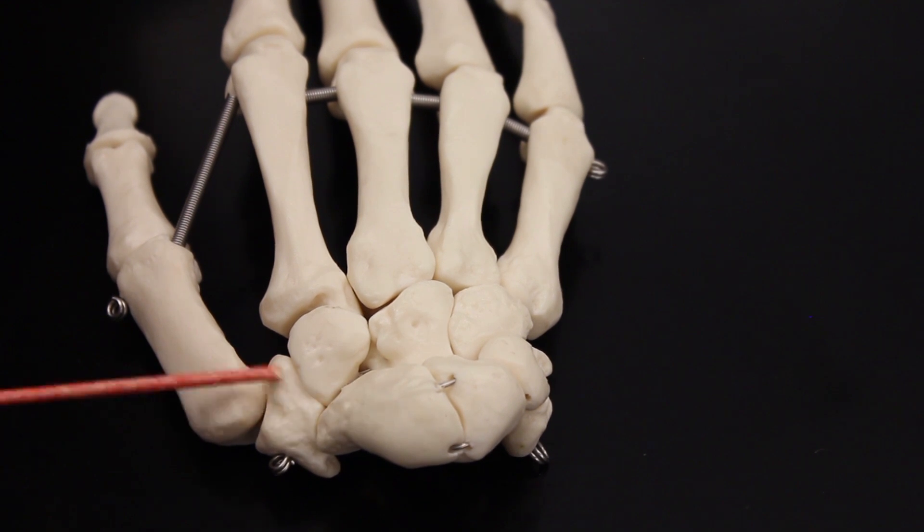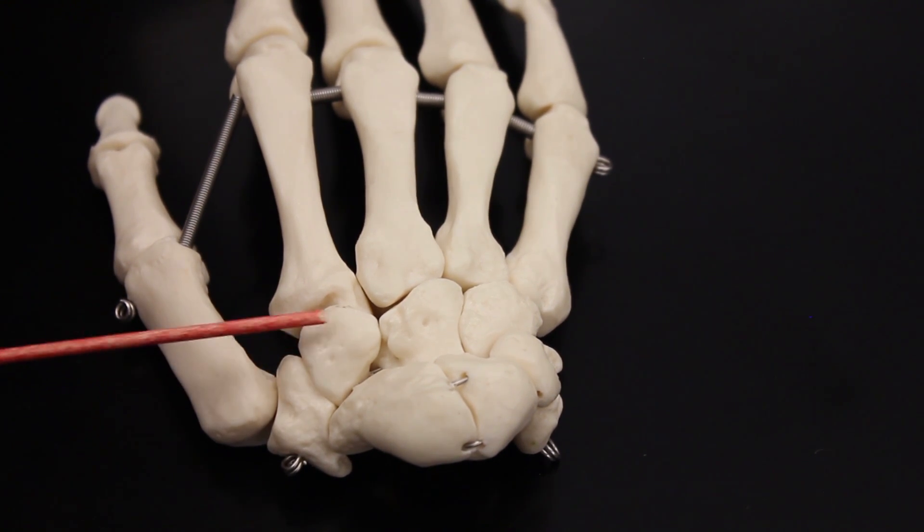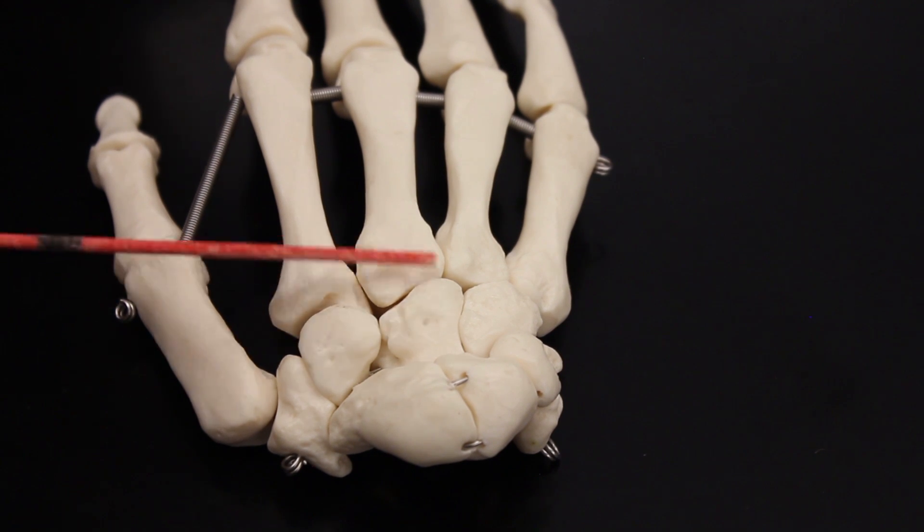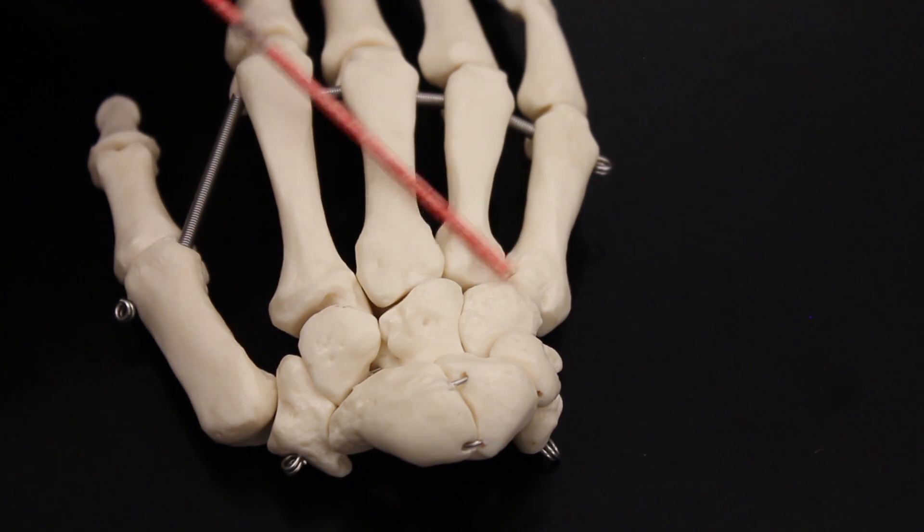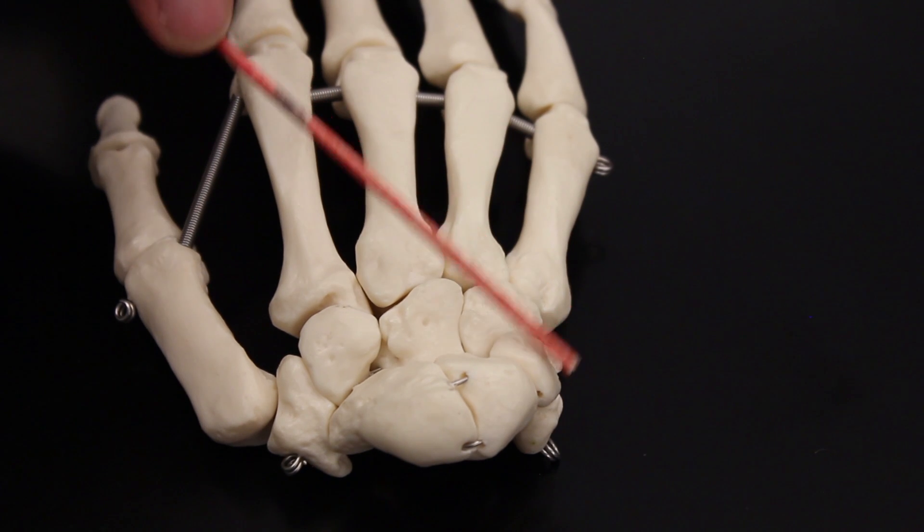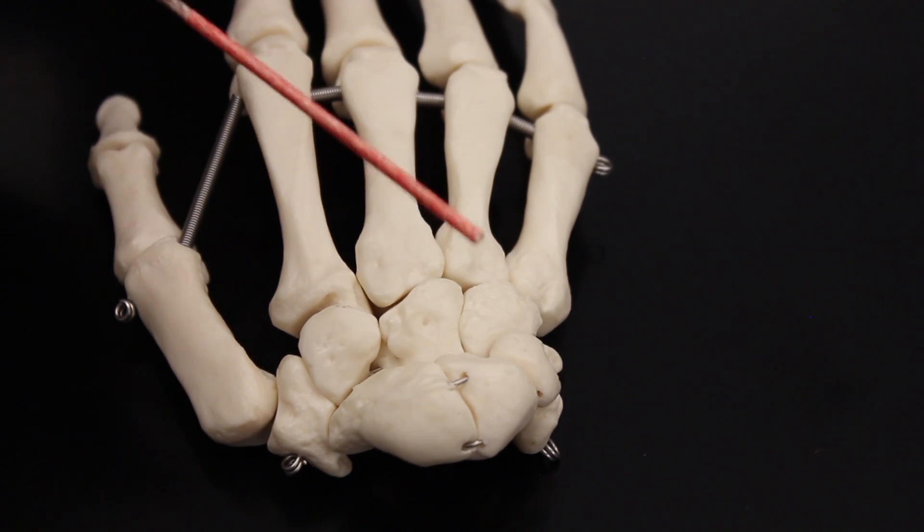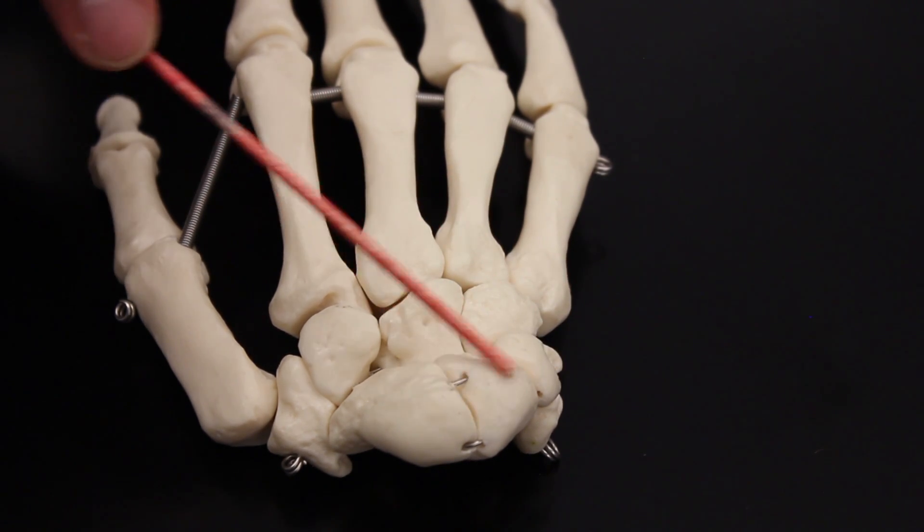And then if I move up here, this is the trapezium. This one right here is trapezoid. This one is capitate. This one right here is hamate. This is triquetrium. And this one right here is going to be lunate.